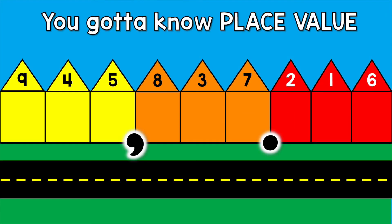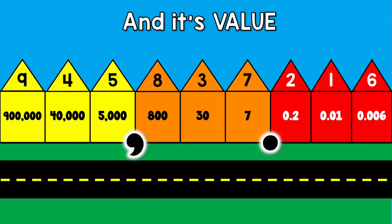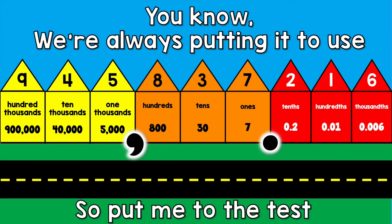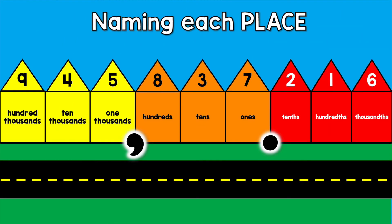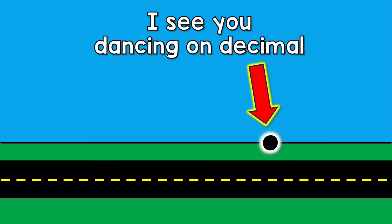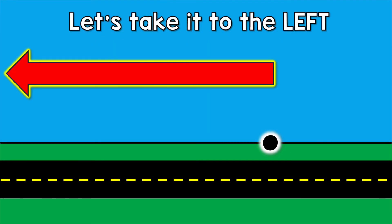You gotta know place value, name it in each place and its value. You know we're always putting it to you, so put me to the test. You gotta know place value, name it in each place and its value. I see you dancing on the decimal, let's take it to the left.